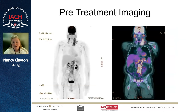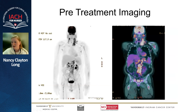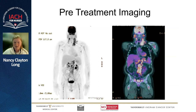This is the pre-treatment imaging for our patient. You can see he has lots of bulky disease throughout his body — this was interval progression of lymphoma right before we used CAR-T. So there was lots of disease for CAR-T to attack.